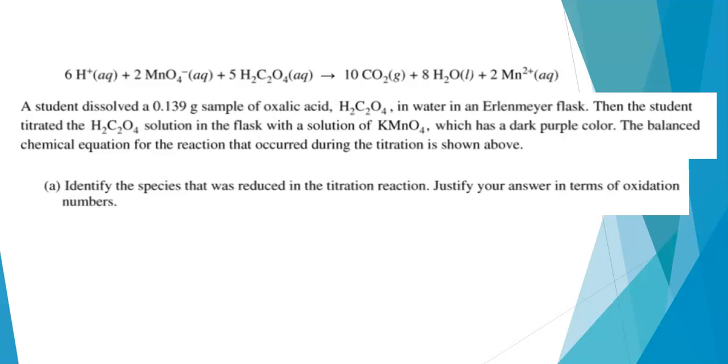We've got a redox reaction. A student dissolved a 0.139 gram sample of oxalic acid, H2C2O4, in water in an Erlenmeyer flask. Then the student titrated the oxalic acid solution with a solution of potassium permanganate, KMnO4, which has a dark purple color. It's a really beautiful, very vivid color. The balanced chemical equation is given here.